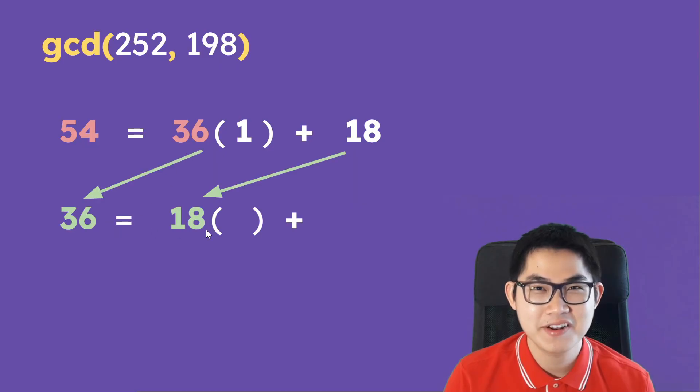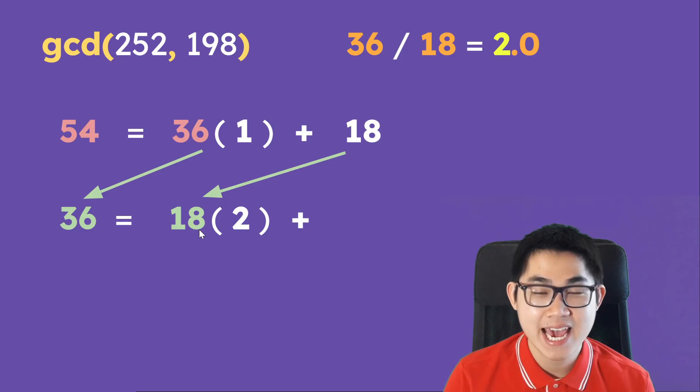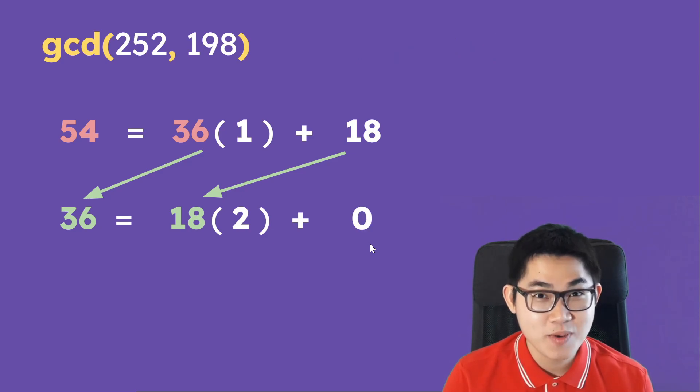Bring the 36 down, and then we bring 18 down. So 36 divided by 18 is 2. We put 2 in the brackets, and what is the remainder? Well, it's going to be 0. So at this point, we're going to stop.